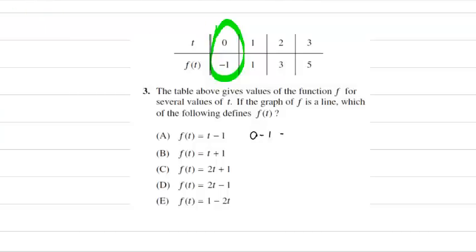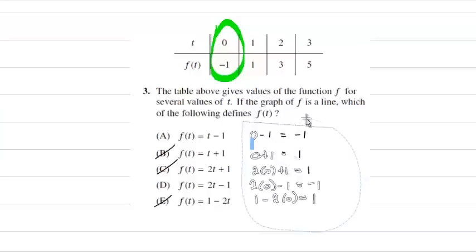0 minus 1 gives us negative 1, so that's not a choice. 2 times 0 plus 1 gives us positive 1, not a choice. 2 times 0 minus 1 gives us negative 1. So that one does work. And 1 minus 2 times 0 gives us positive 1, so that's not one of the choices. Now we're down to only choices A and D.